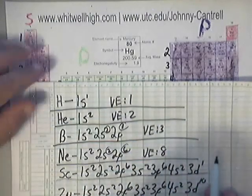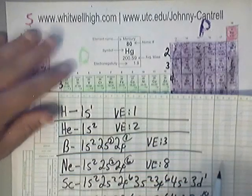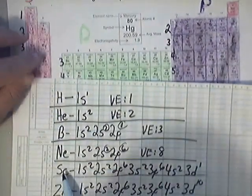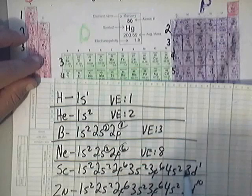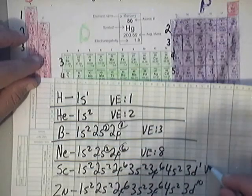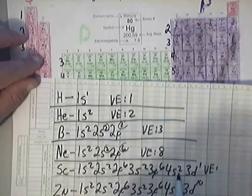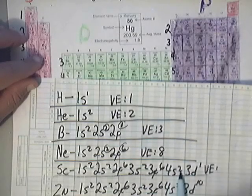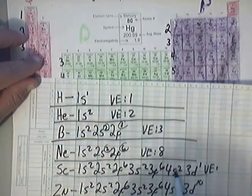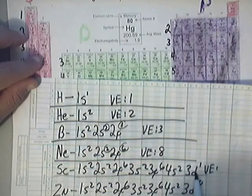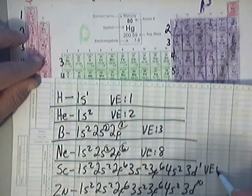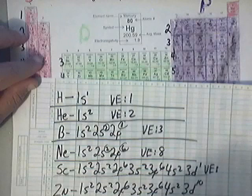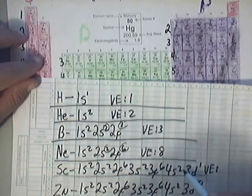Scandium is in column three on the periodic table, so it has three valence electrons. Looking at the configuration, you get two from the outermost orbital 4s² — the highest energy level. But the d orbital is partially filled. If the d orbital is ever partially filled, you count it and its electrons, so you add the two and the one to get three.